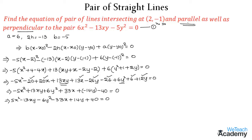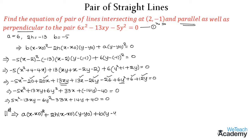Now let us discuss the parallel equation. The equation of pair of lines which are parallel to the given equation and intersecting at a given point is given by the formula: a(x - x0)² + 2h(x - x0)(y - y0) + b(y - y0)² = 0.